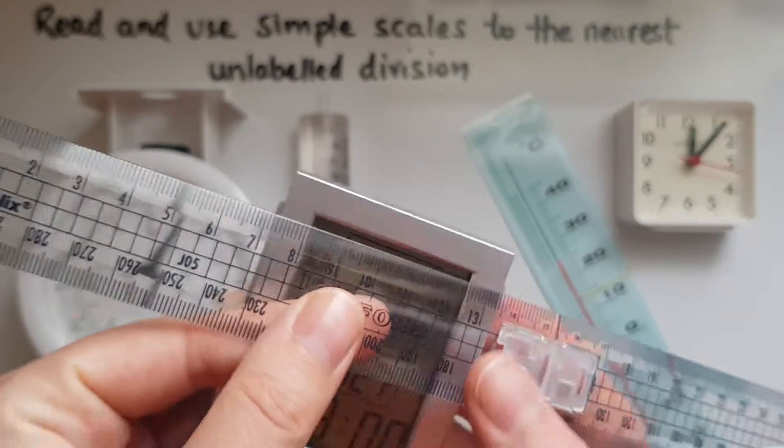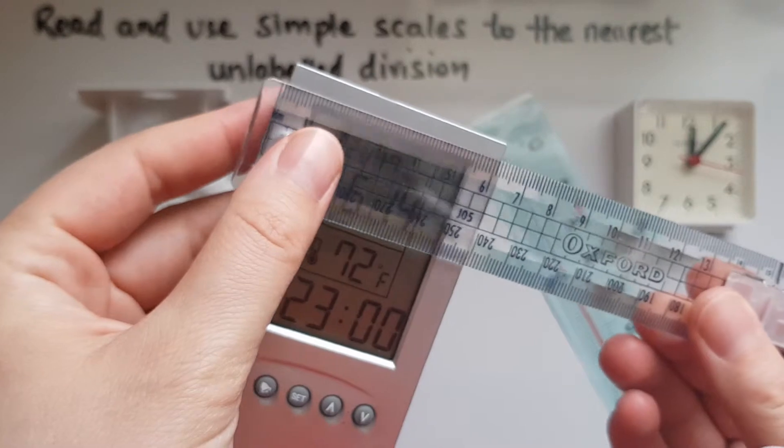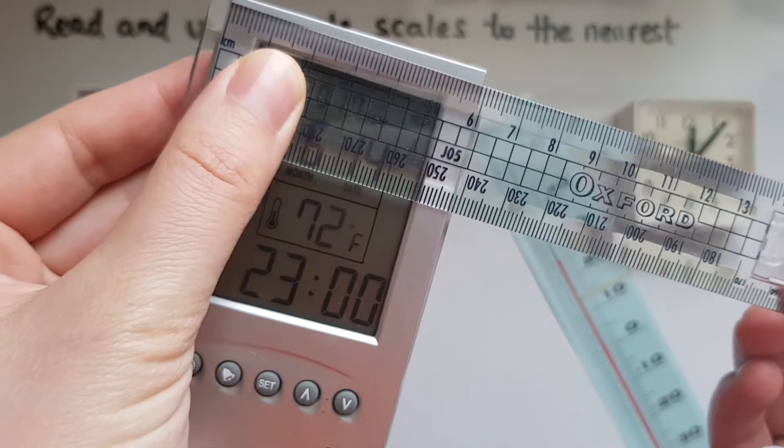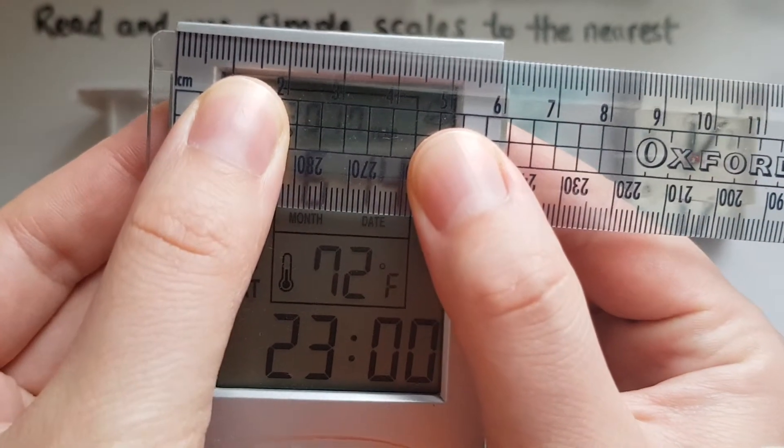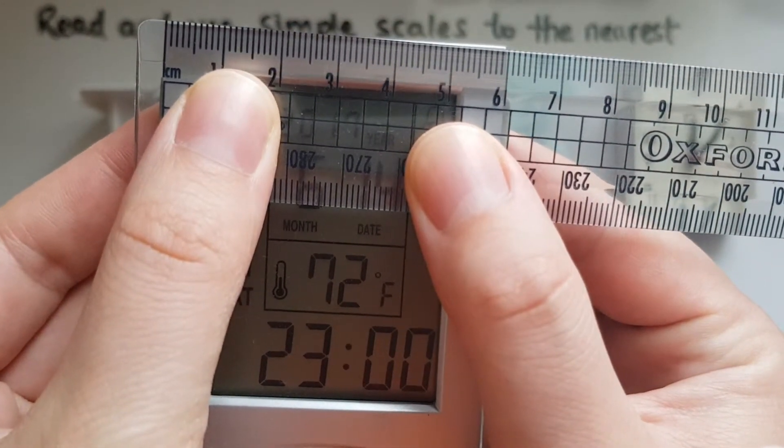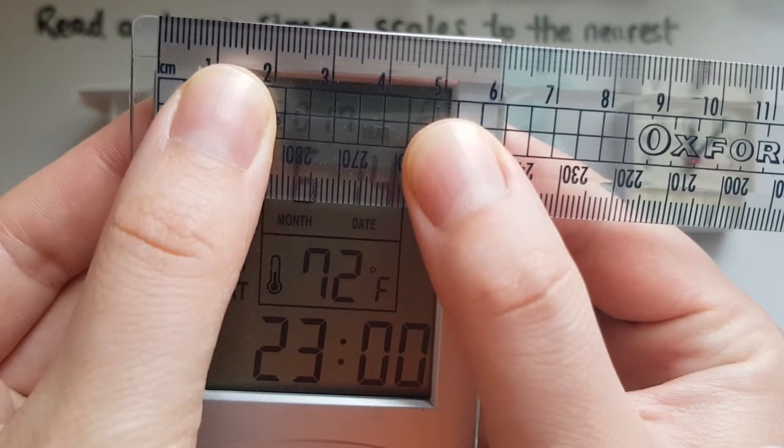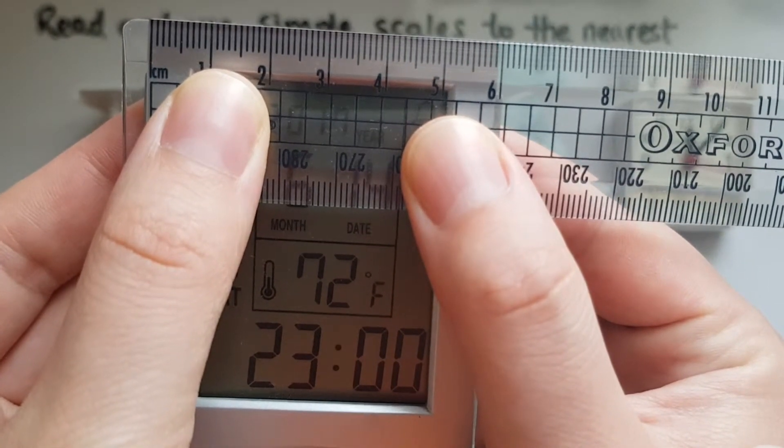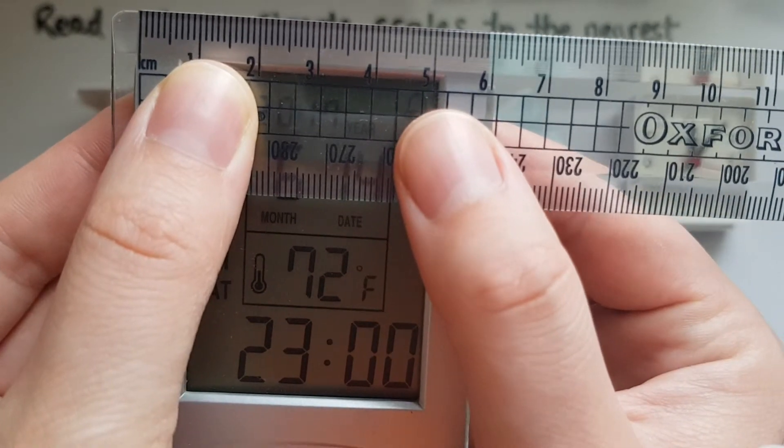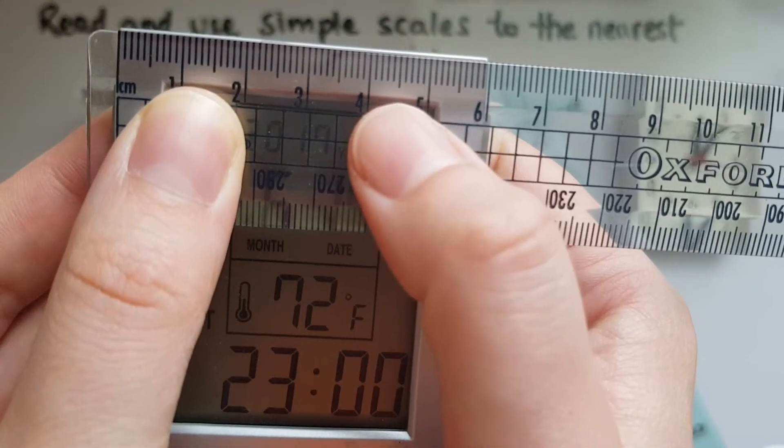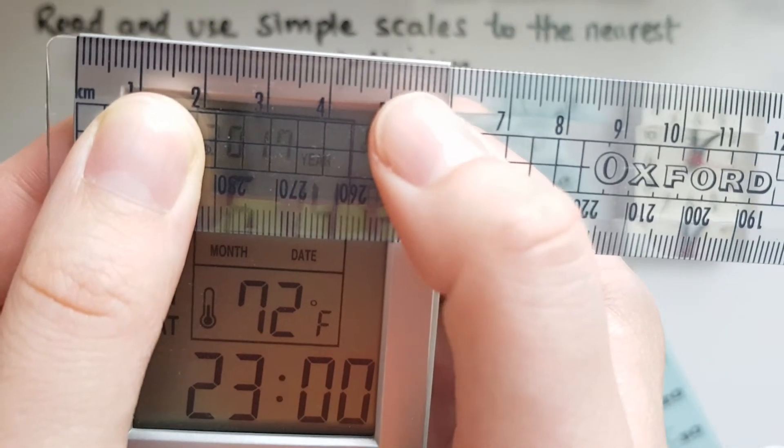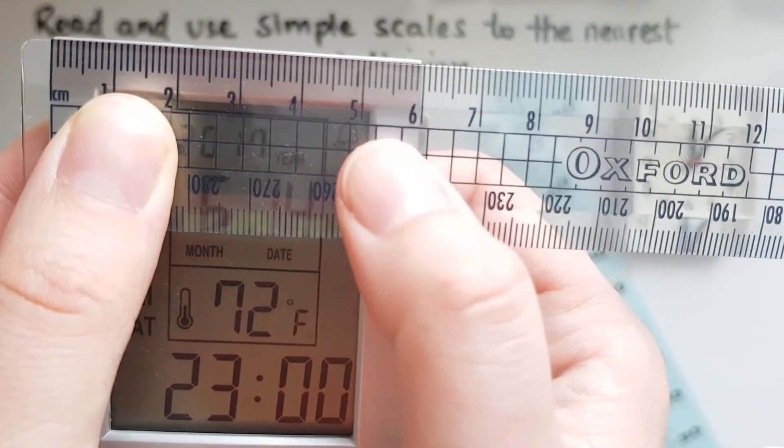Let's have a look at measuring this. So now if we have a look at this, this is not exactly 6 cm. It's closer to the division just before it. So what must it be? We've got 5 cm here and we've got 6 cm here. And we've got 10 small divisions, as we know already, in between them.